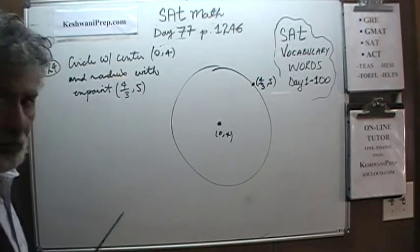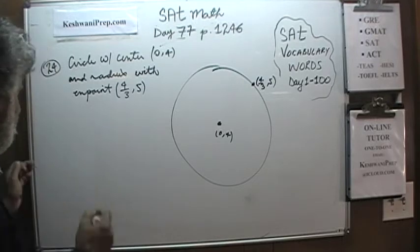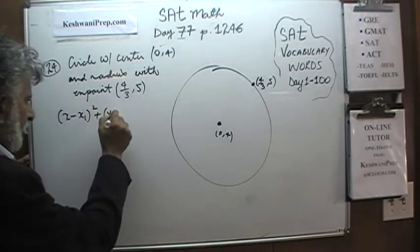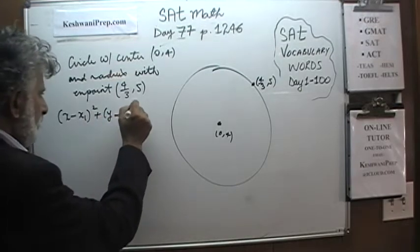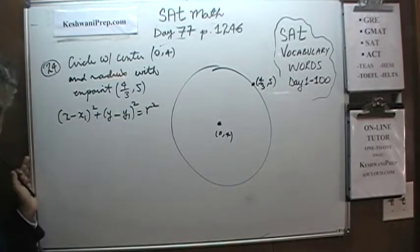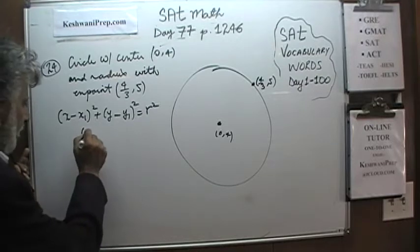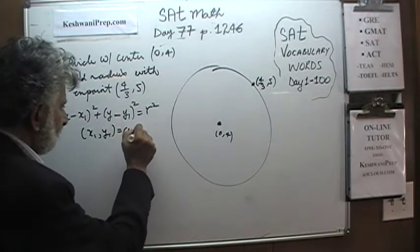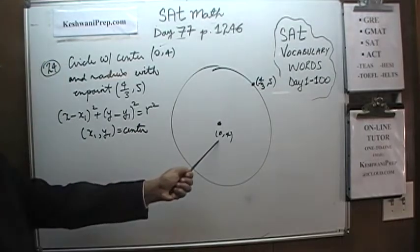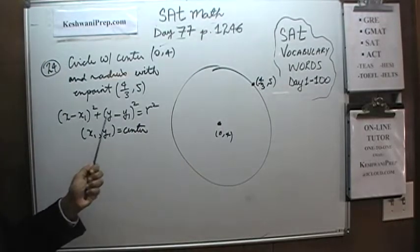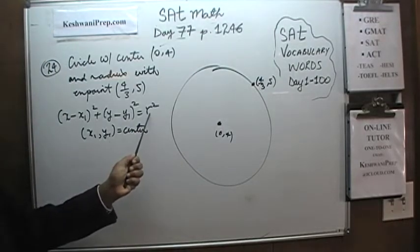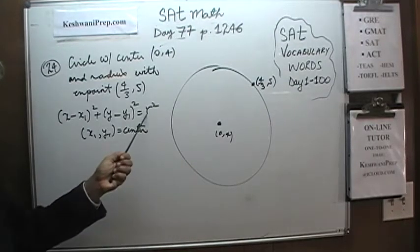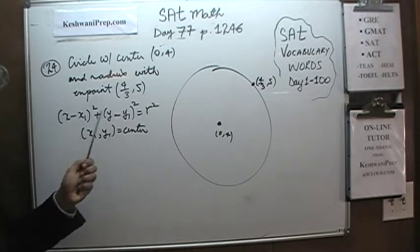We know the center and we can use this equation: (x − x₁)² + (y − y₁)² = r². Here x₁ and y₁ represent the center, which we know. We just have to figure out the radius of this circle. If we can figure out the radius, we can put it in and solve for it.